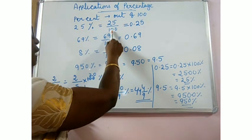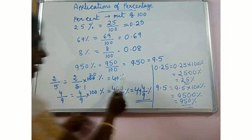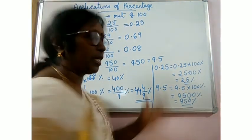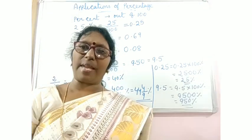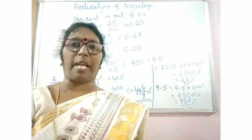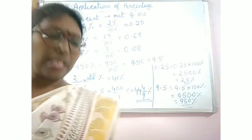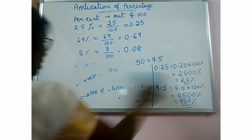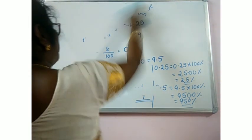So, percentage to fraction, fraction to decimal, here from fraction to percentage, here decimal to percentage. Remember that if the given number is whatever it may be, if you want to convert to percentage, you have to multiply by 100%. Now, basing on this, some more examples and a little different variety of questions.